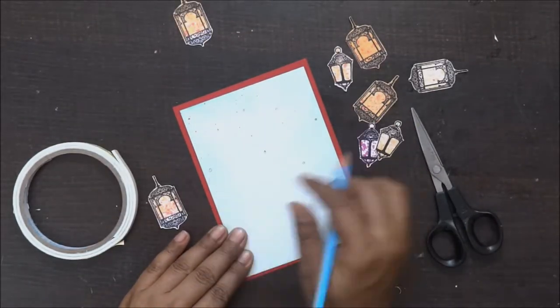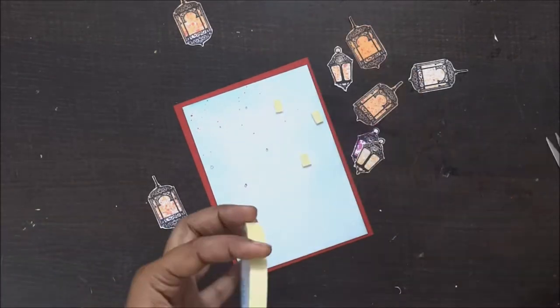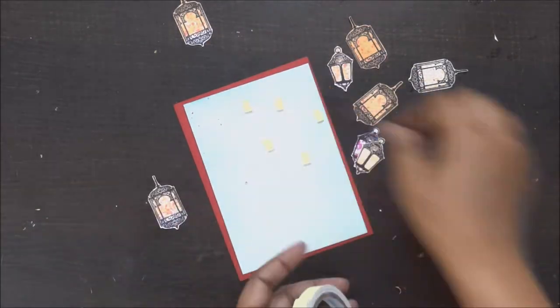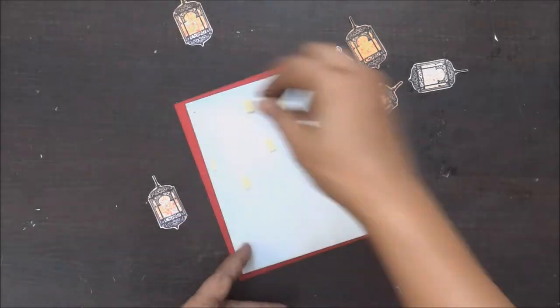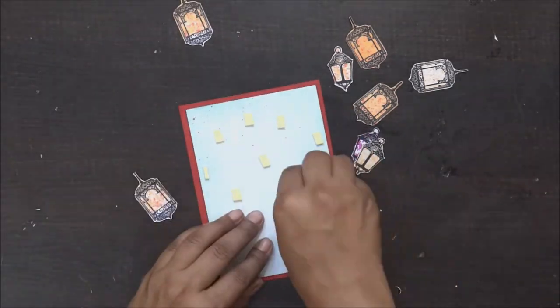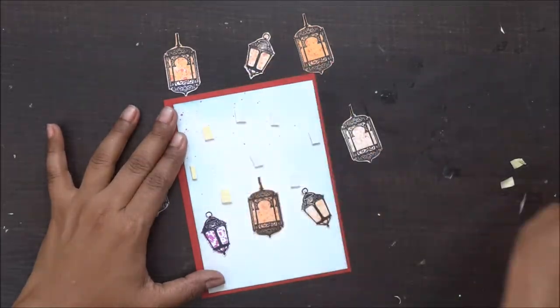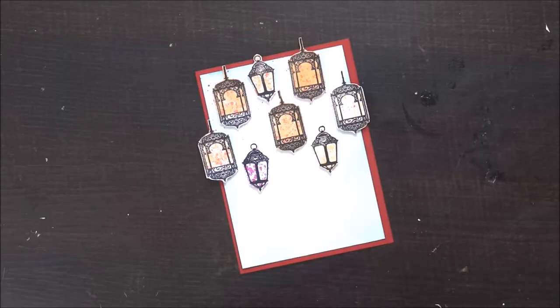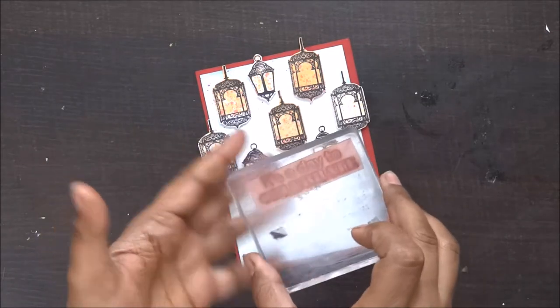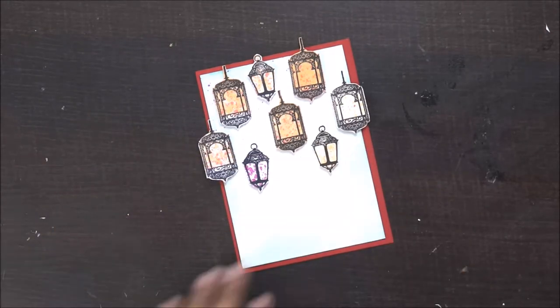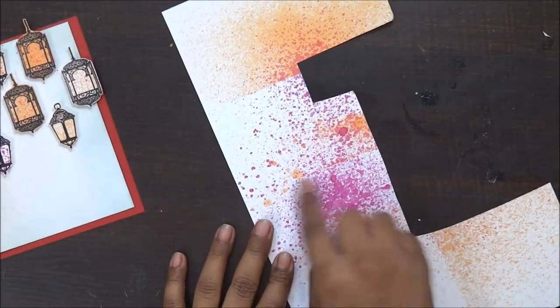So I can put my 3D foam tape on it and stick it accordingly. Adding foam tape is a really good idea to give dimensions to your stamped images or sentiments. Once I'm done with foam tapes, I'm going to stick my lamps finally on it. Make sure you stick them properly.